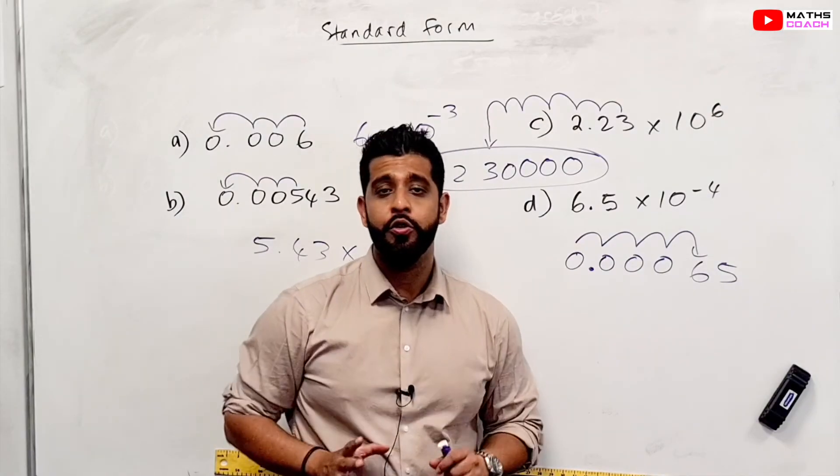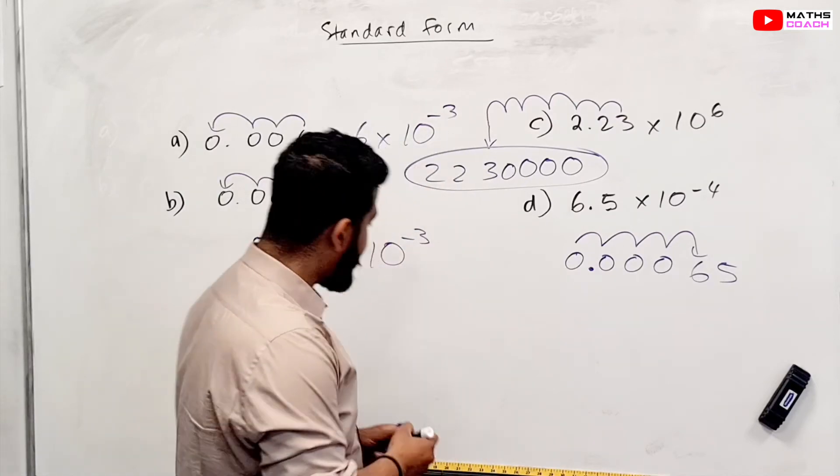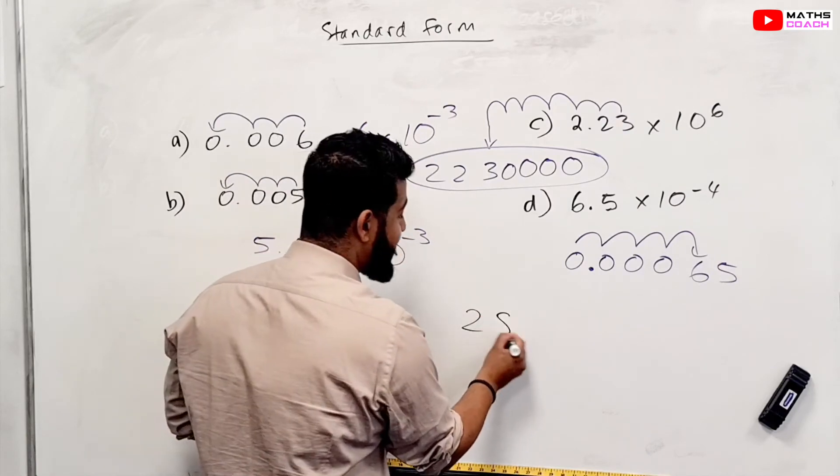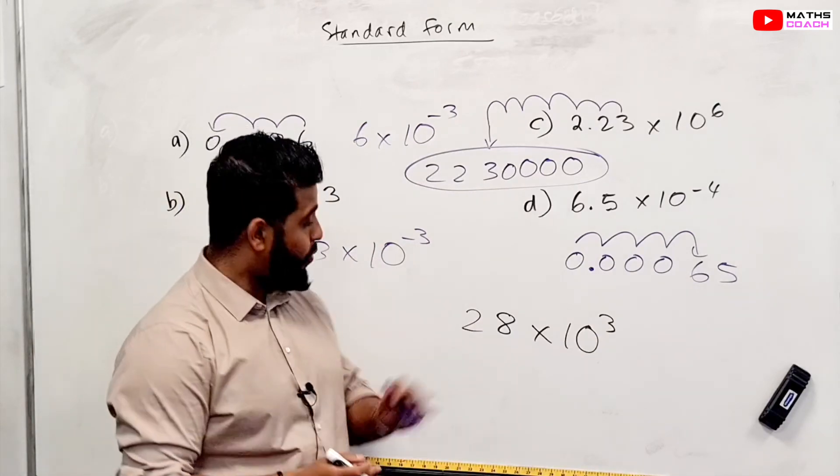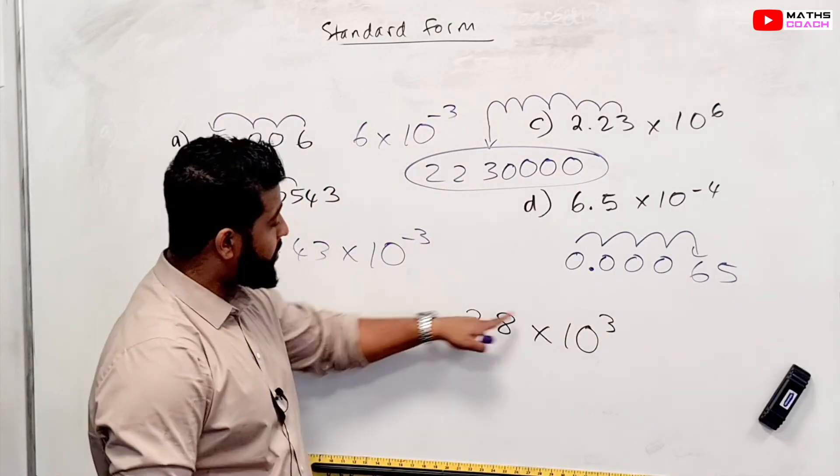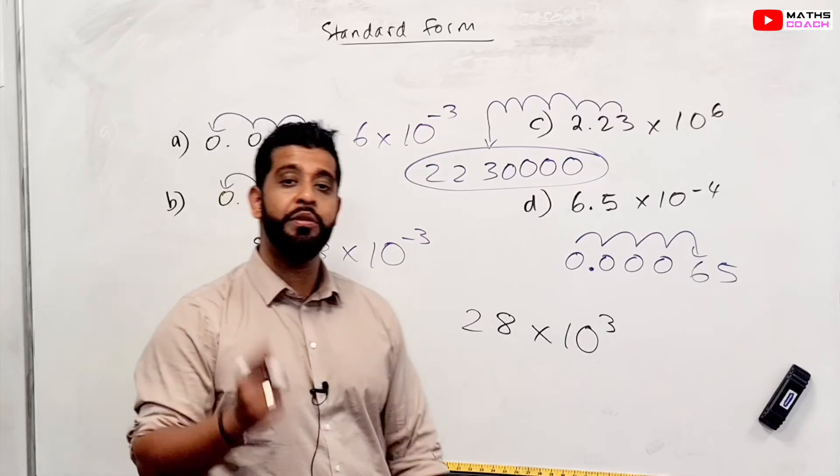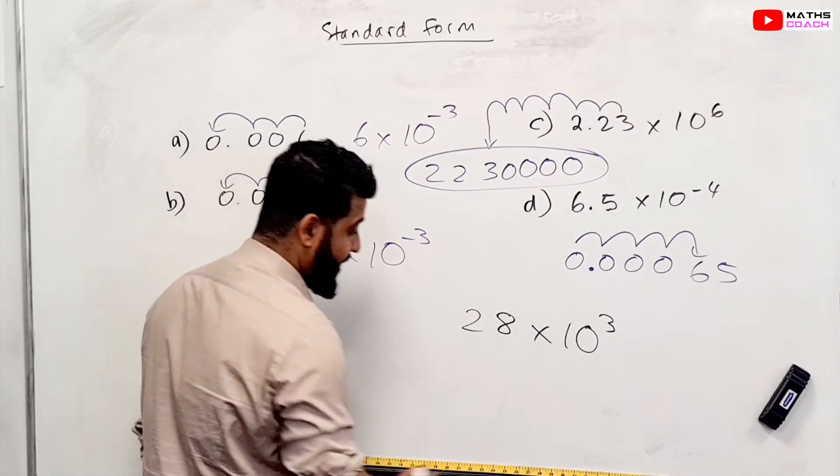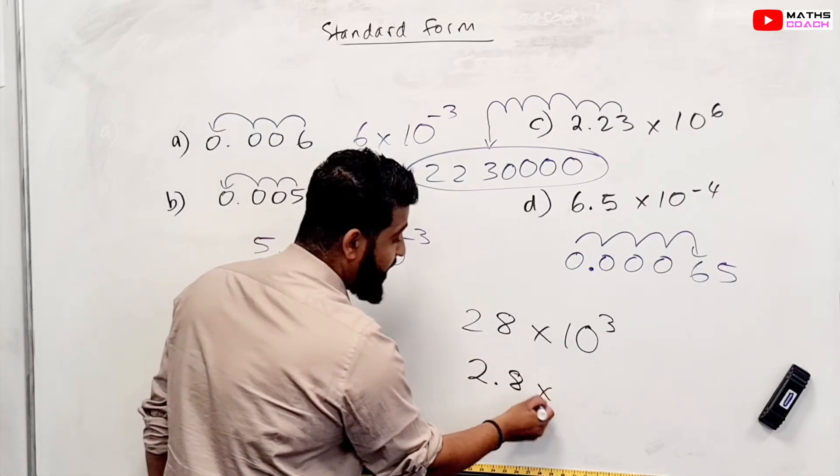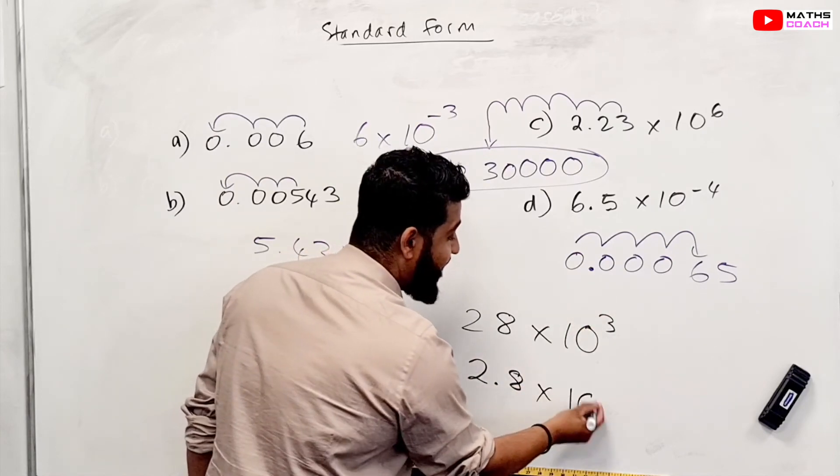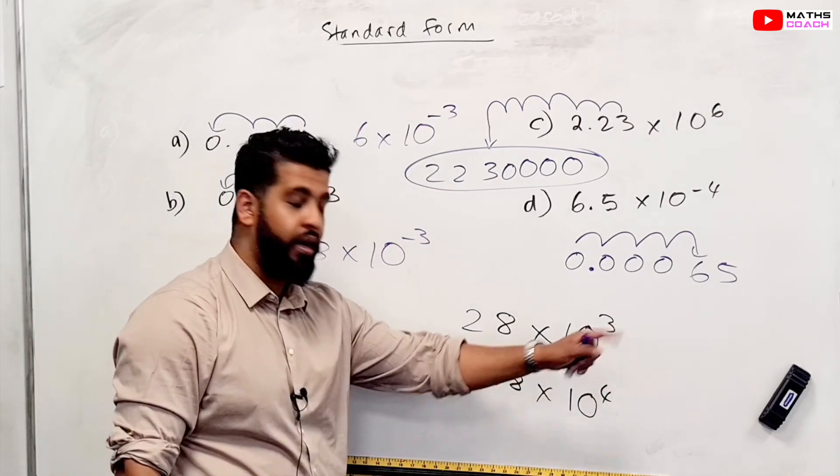Now before we end this video, I want to show you an example of a classic mistake that students make. And that is when a number already looks like it's in standard form. So you might get something like this, and you're thinking it's already in standard form. Why is this number not in standard form? Because this. This is 28. It's too big. It's bigger than 10. Remember, this value here has got to be between 1 and 10. So to put this number into standard form, you've got to make it 2.8. Now, because you've pushed the numbers this way, what will you do here? You'd add another power. So it will become 4. So it would be 2.8 times 10 to the power of 4.